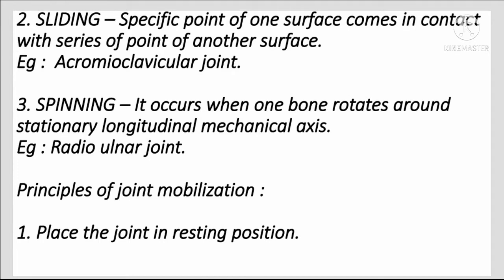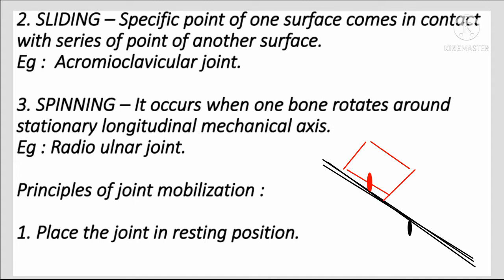The second type of motion is sliding: a specific point on one surface comes in contact with a series of points on another surface, for example the acromioclavicular joint. One specific point on the first surface makes contact with successive points on the other surface — that is sliding.